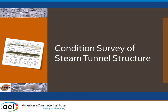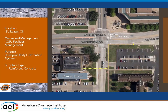We're going to look at a condition survey done on the steam tunnel structures. This is purely a condition survey — no engineering assessment, no sampling, no testing — just confirmation of the salts that were present. The project is in Stillwater, Oklahoma at OSU campus, managed by OSU Facilities Management, who granted me access. The structure runs from the power plant along the sidewalk, and we inspected approximately 500 feet of tunnel.